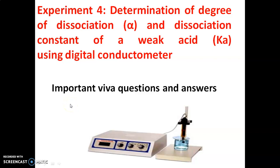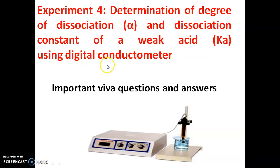Yaluriku Namaskara. In this video, we will discuss about experiment number 4, i.e., Determination of degree of dissociation (alpha) and dissociation constant of weak acid (Ka) using digital conductometer. These are important viva questions and answers for your lab internals and lab exams.